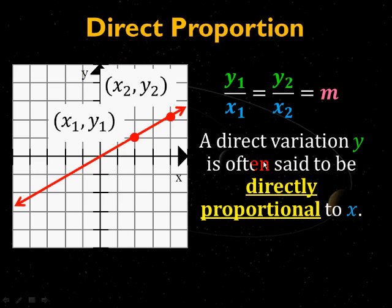y1 over x1 equals y2 over x2. That equals m. This equality of ratios is called a proportion. And m is the constant of proportionality. This is a direct proportion if you have a line. A direct variation y is often said to be directly proportional to x.